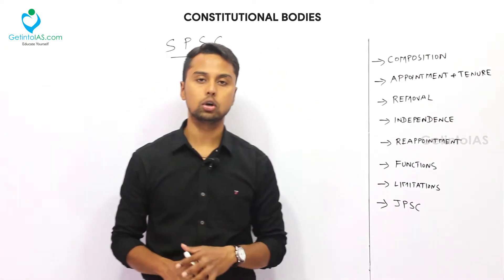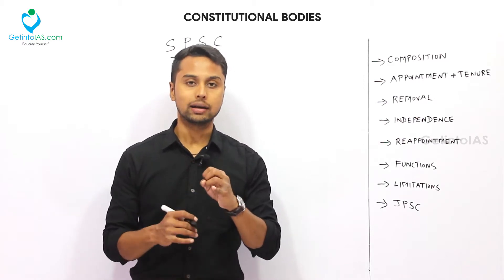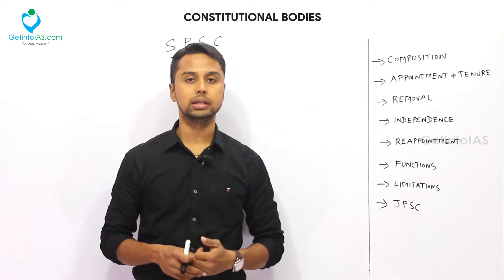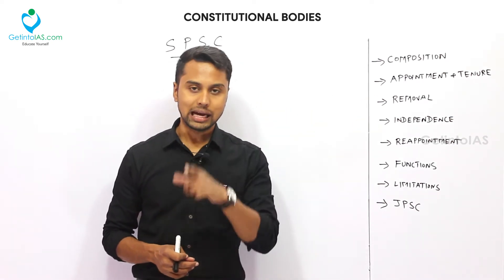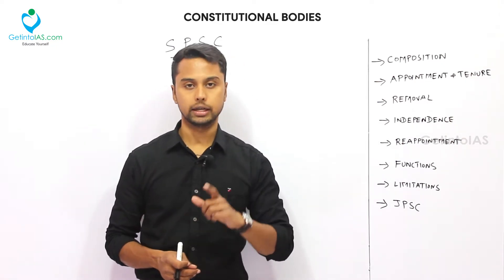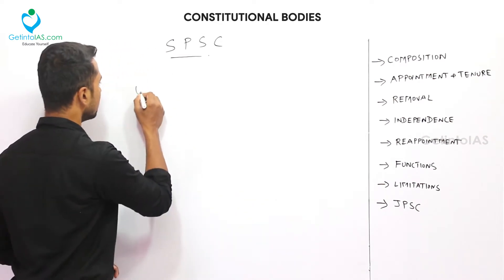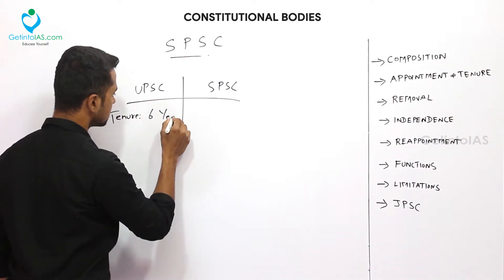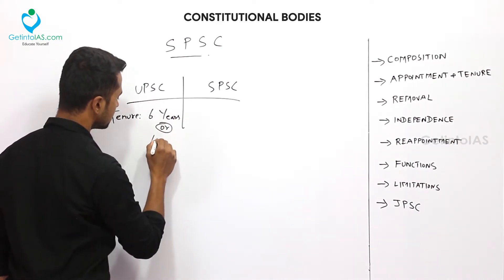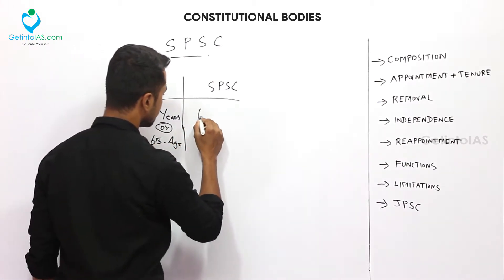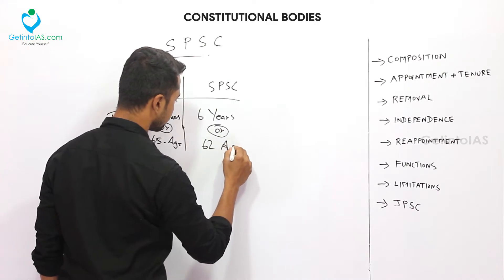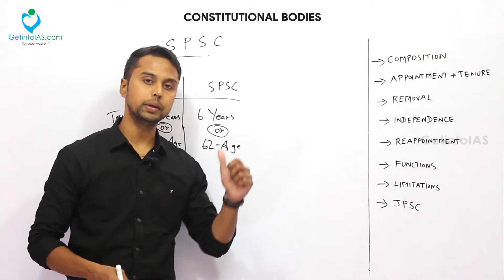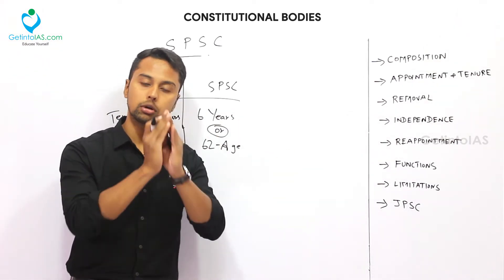About the composition: it consists of one chairman and other members as determined by the governor. Since it is the State Public Service Commission, the composition is determined by the governor, and the chairman as well as the members are appointed by the governor. There is a key difference in tenure: for UPSC it is 6 years or 65 years of age, but for SPSC it is 6 years or 62 years of age. That is one difference, along with the difference in jurisdiction — UPSC is for the whole of India, SPSC is for the respective state.